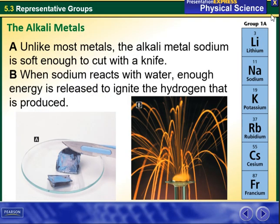The alkali metals are lithium, sodium, potassium, rubidium, cesium, and francium. Lithium is the least reactive of this group and reactivity increases going down, with francium being the most reactive element in the group.